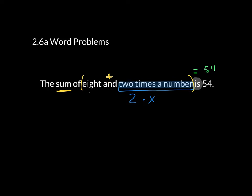So now all of this translates to 8. I bring down my plus sign because I'm adding the two pieces together. So 8 plus 2 times x, which is the same thing as 2x, is equal to 54.